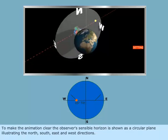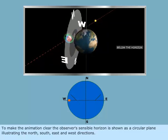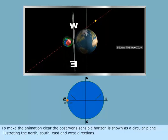To make the animation clear, the observer's sensible horizon is shown as a circular plane illustrating the north, south, east and west directions.